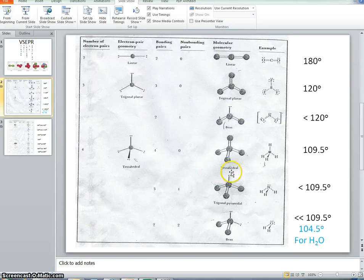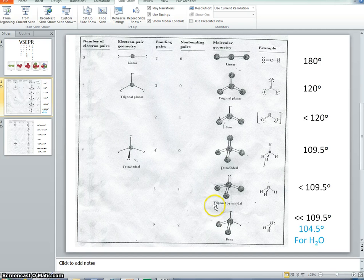In this video, we're going to draw the VSEPR structure for the trigonal pyramidal shape. It has one, two, three, four electron pairs.